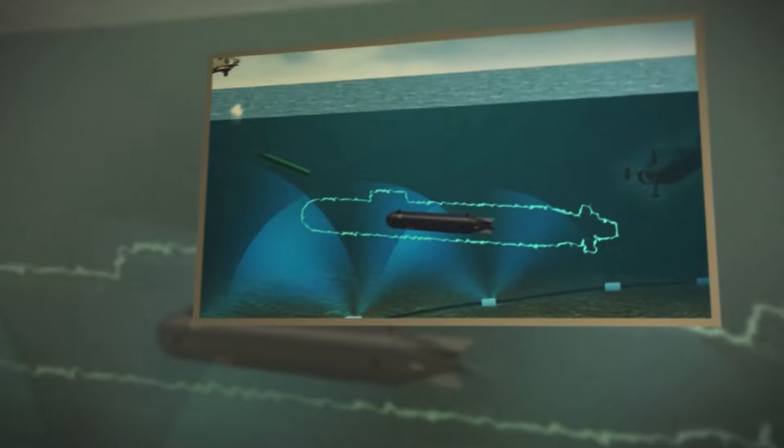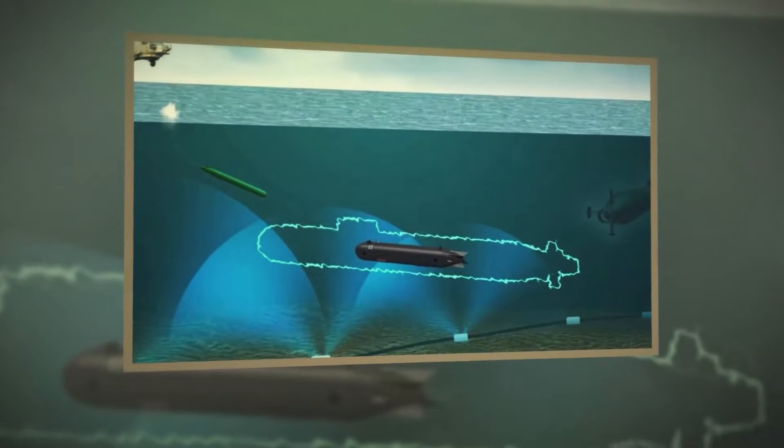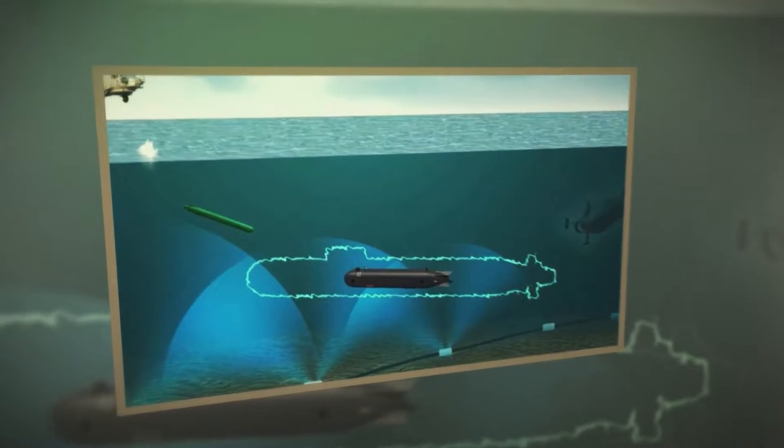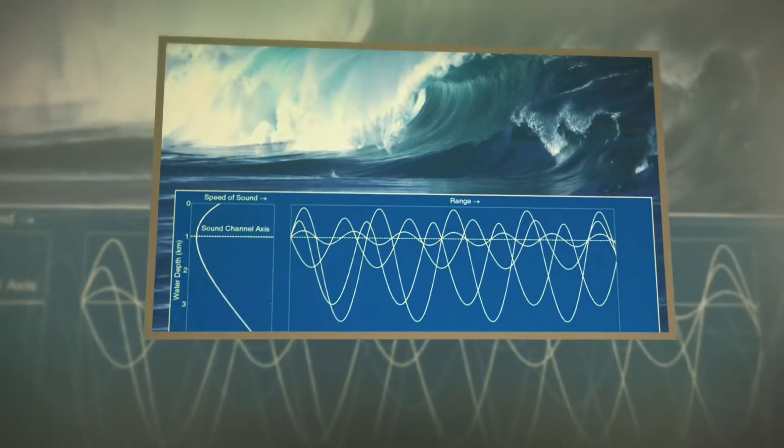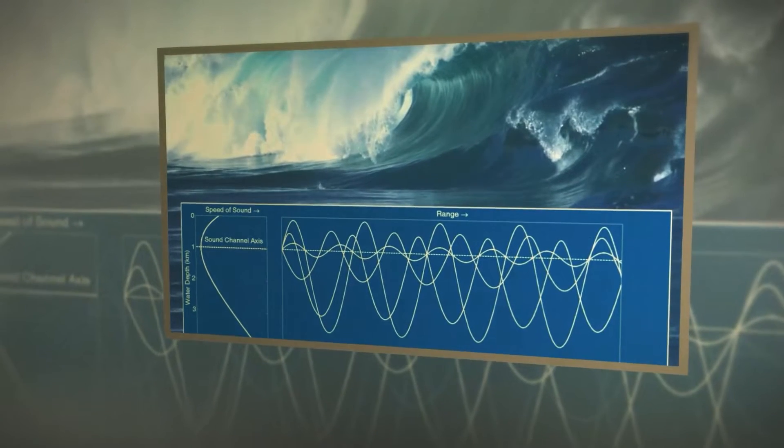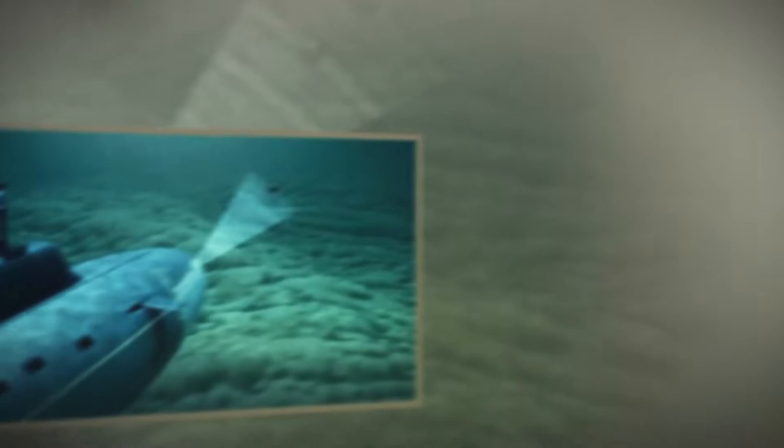For example, the presence of an underwater sound channel can dramatically increase the detection range, and vice versa. The thermocline layer, after which the water temperature, density, and chemical composition change dramatically, serves as a barrier, and can make the boat acoustically invisible.